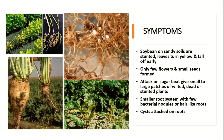Cysts form on the roots. These are the perpetual forms which are used by these nematodes for perpetuation and for overwintering. Cysts are very important and dangerous structures because they are very hard and can survive in the soil for more than 10 years.